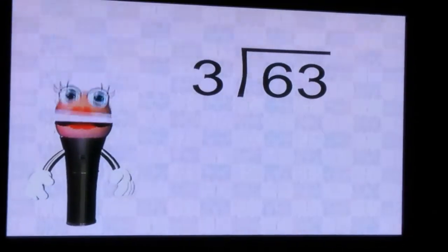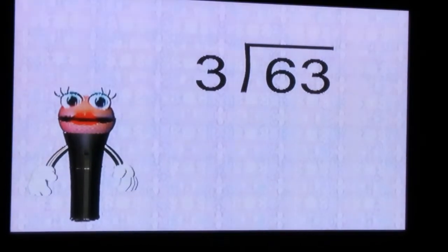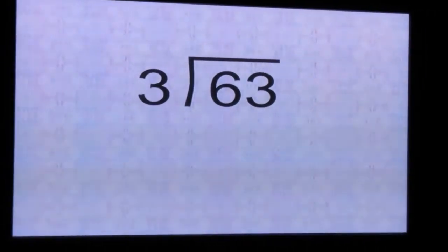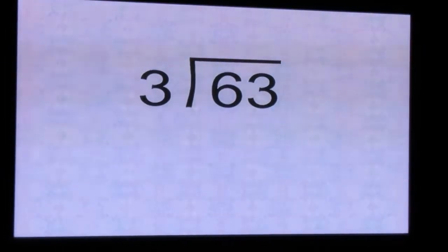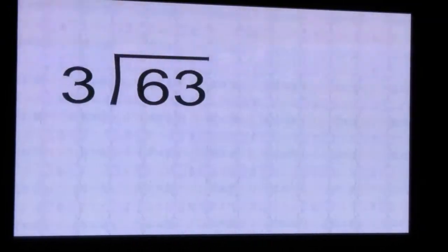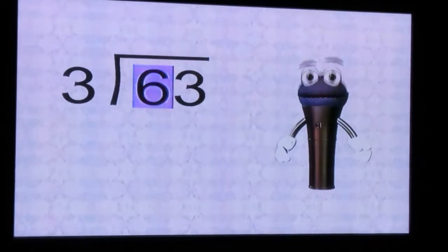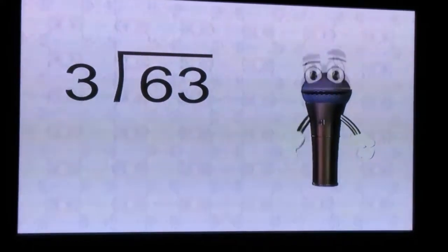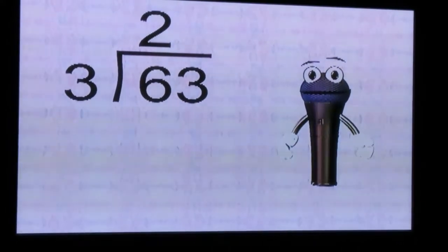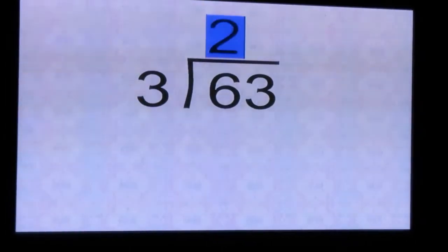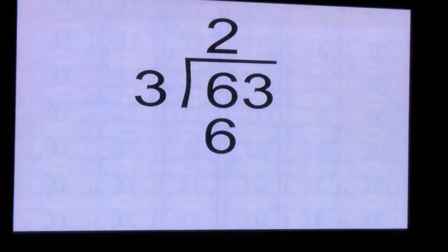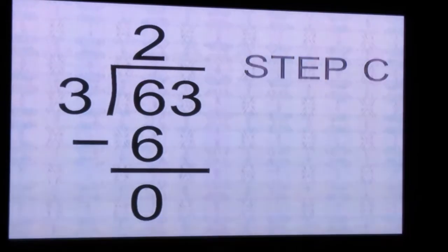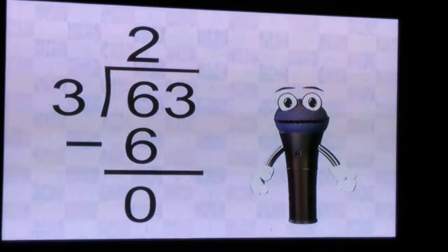Suppose you wanted to divide 63 by 3. Step one is dividing 60 by 3 because a 6 is in the tens place. 63 is 6 tens and 3 ones. Step A: 6 divided by 3 is 2, so we put a 2 above the 6 where the quotient belongs at the top of the problem. Step B: Write a 6 under the 6 and subtract. 6 minus 6 is 0. Step C: We bring down the 3 as shown.